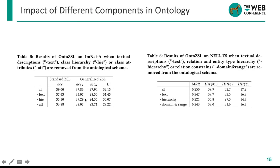We also evaluate the impact of different components in the ontological schema by removing them and analyzing the performance drop. According to the ablation results on ImageNet and NELL datasets, we find that all components have positive contributions to the ZSL model and are complementary to each other.